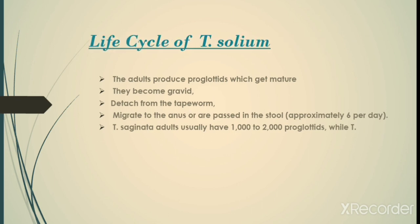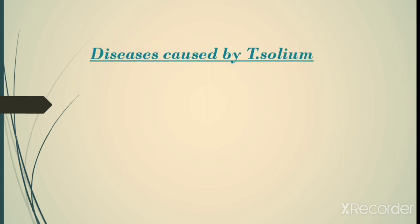The life cycle of Taenia solium: the adults produce proglottids which get matured and become gravid; they detach from the tapeworm and migrate to the anus or are passed in the stools — approximately six per day. Taenia saginata adults usually have one thousand to two thousand proglottids.